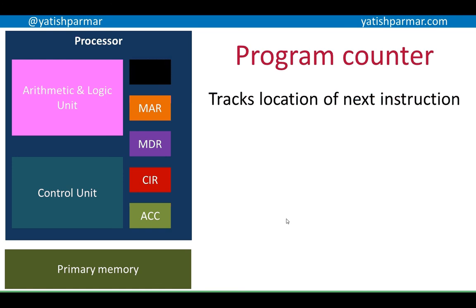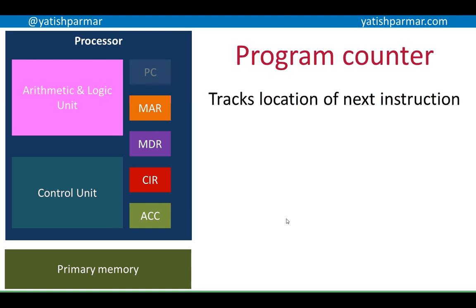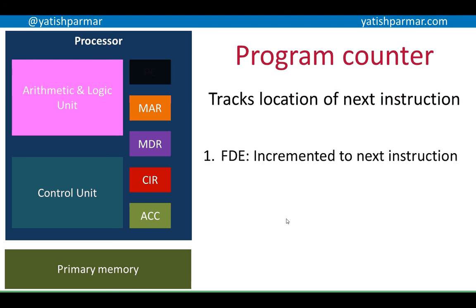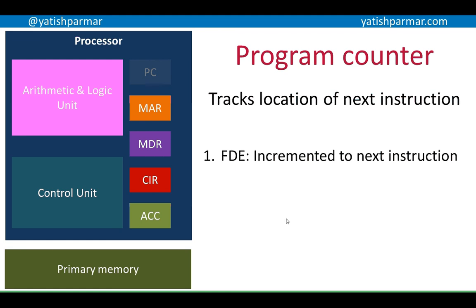The first one is the program counter. This tracks the location of the next instruction. There are two possibilities for incrementing the value of the program counter. In normal execution, the FDE cycle is just incrementing to the next instruction — the next mailbox in memory, plus one to the next address.